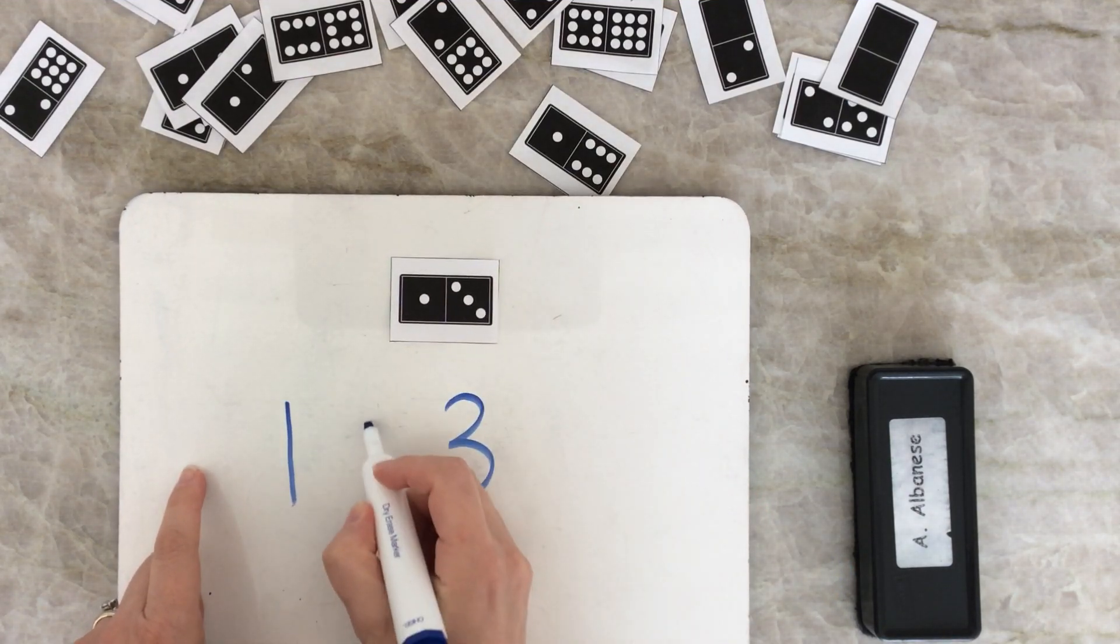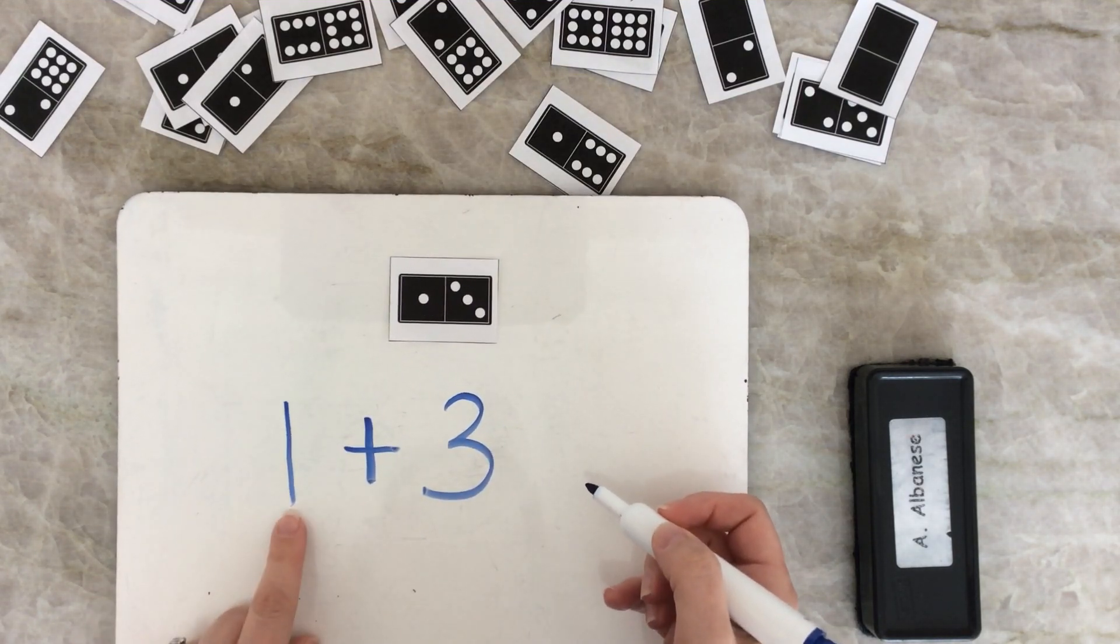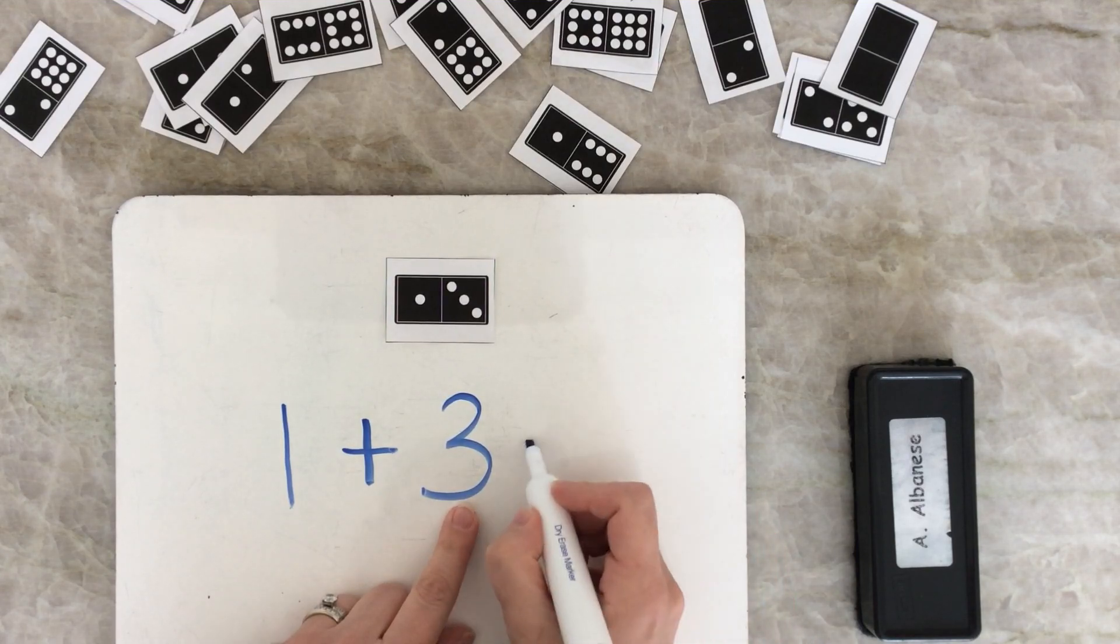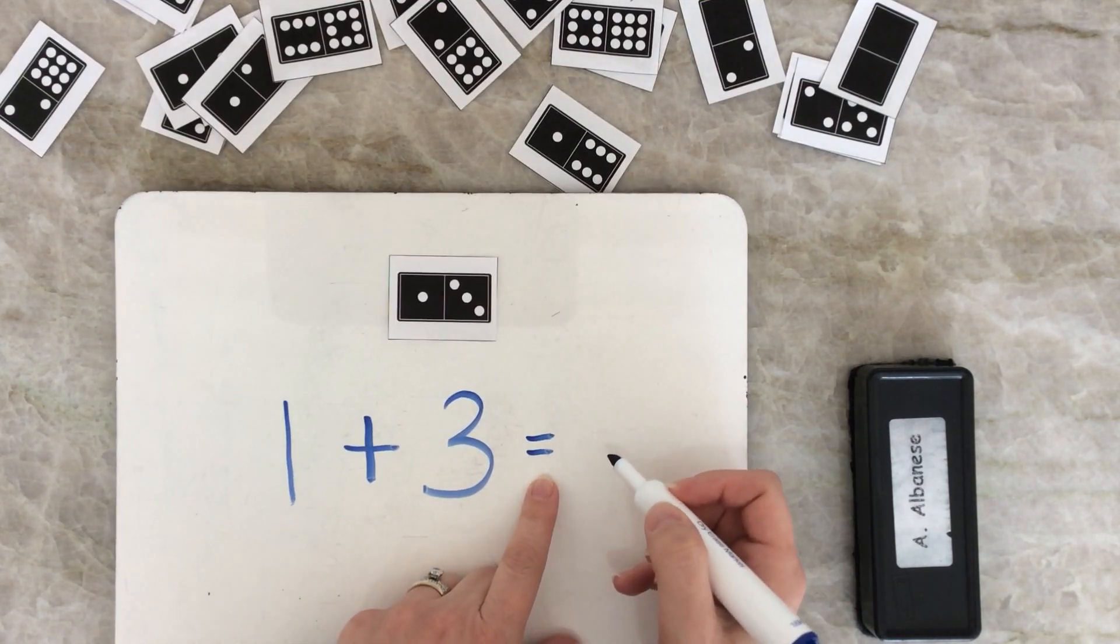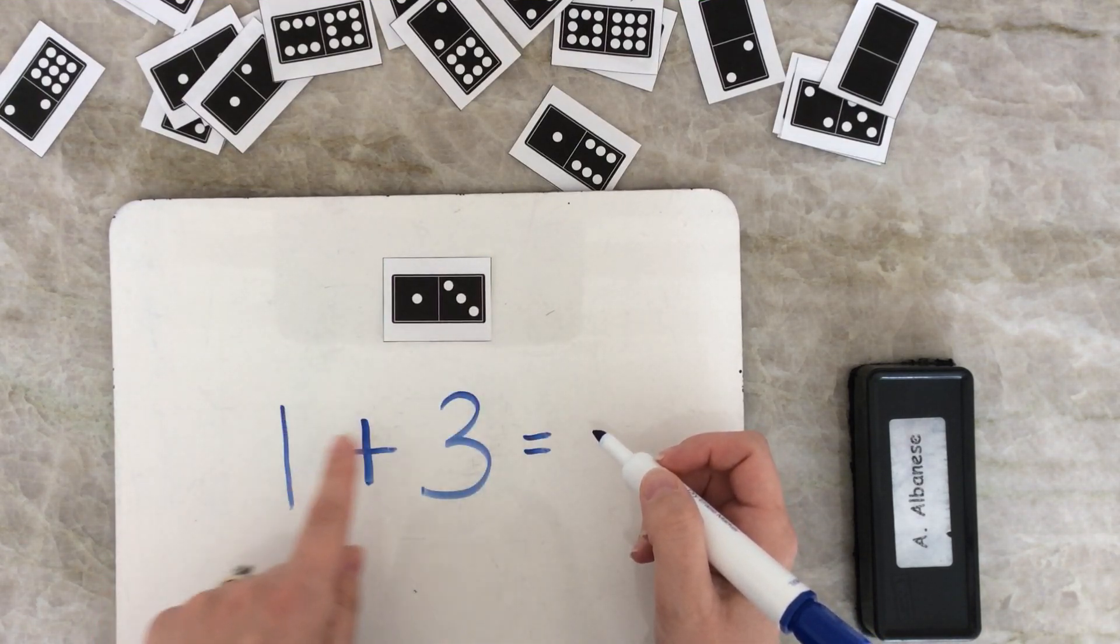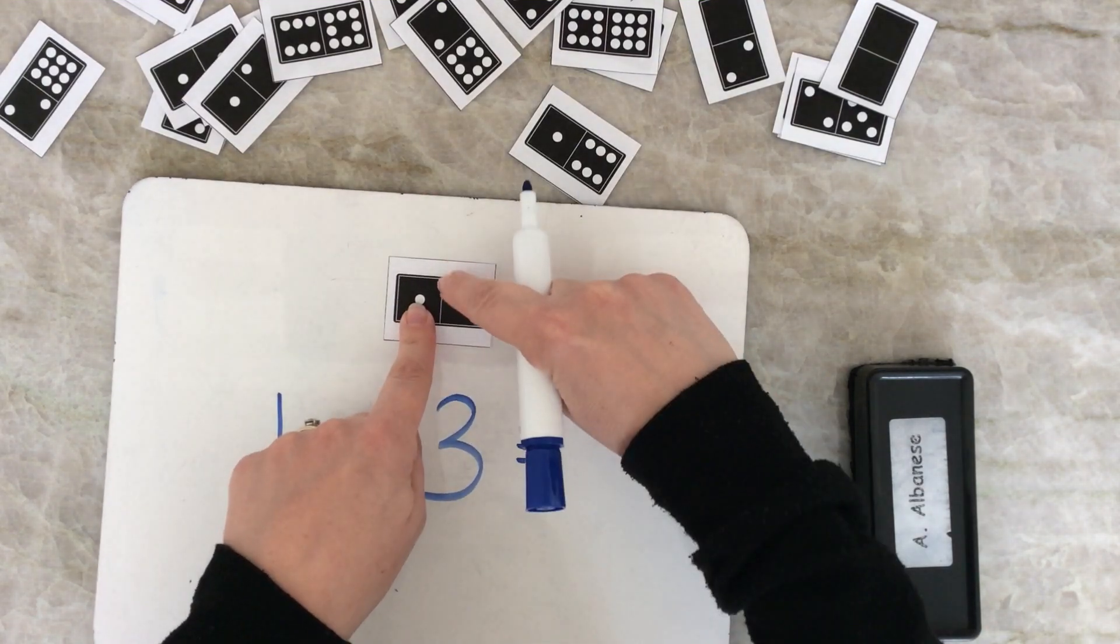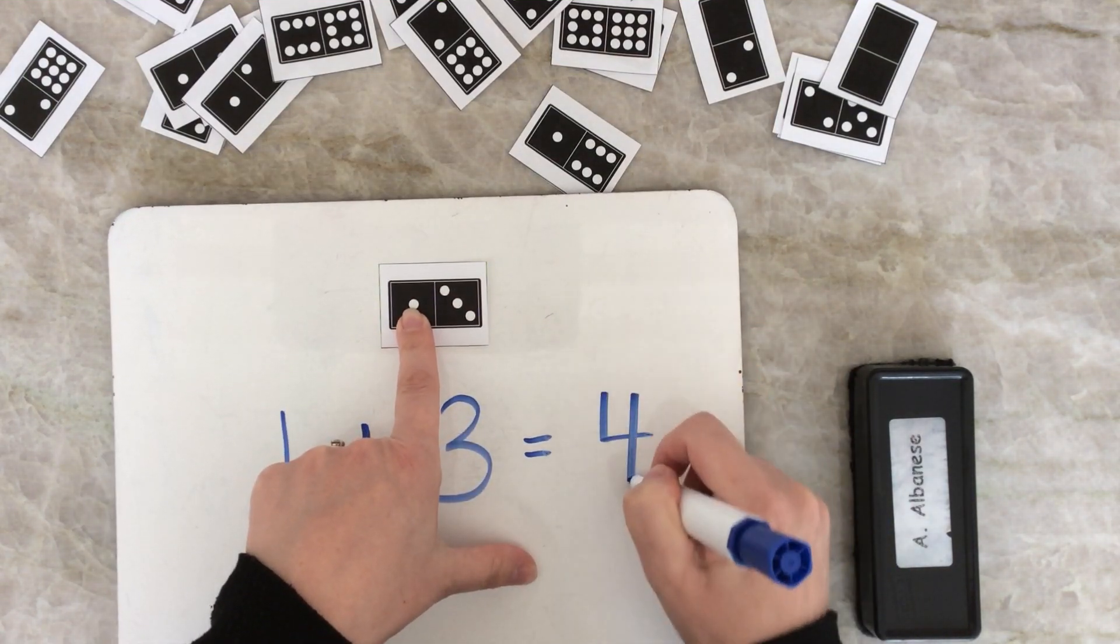I'm going to put a plus sign in the middle, and now it says 1 plus 3. Remember what that is? That's an equal sign. I'm going to say the magic word equals, and we're going to figure out what it is. 1, 2, 3, 4. My answer is 4.